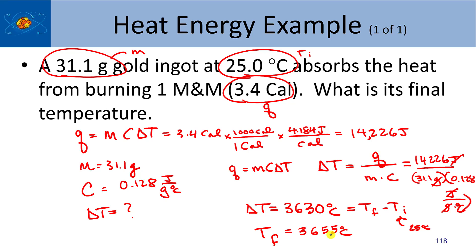After correcting a calculation error, it ends up being 3,655 degrees Celsius — which is actually above the boiling point of gold, so you can't actually reach that temperature. But that's how much energy is in one M&M. If it had been water instead of gold, the specific heat would have been 4.184, and plugging that value in would have been just enough to raise the temperature over 100 degrees Celsius — actually enough to boil 31 grams of water. It's probably a good thing that it takes a while to metabolize foods in our body.